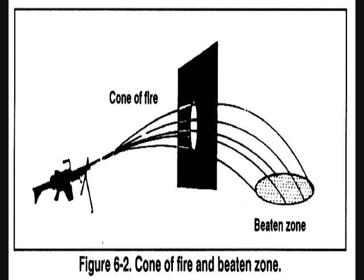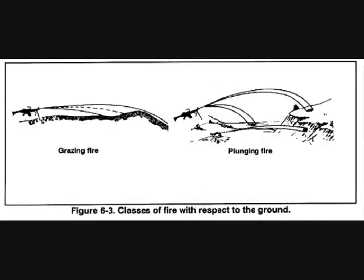E — danger space. This is the space between the weapon and the target where the trajectory does not rise above 1.8 meters, including the area of the beaten zone. When the M249 is fired on level or uniformly sloping terrain at a target less than 700 meters away, the trajectory will not rise above the average height of a standing soldier — meaning any human standing between you and that aim point is guaranteed to be hit. At ranges greater than 700 meters, the trajectory rises above a standing soldier, so not all the distance between you and your aim point is danger space.